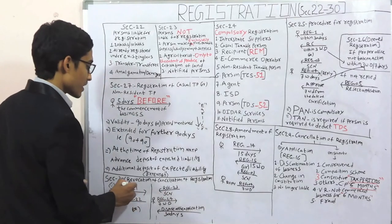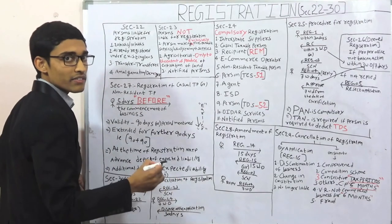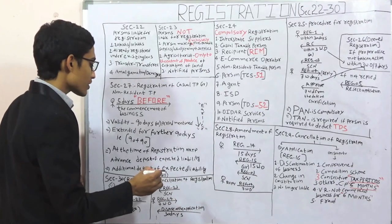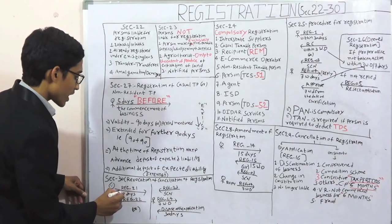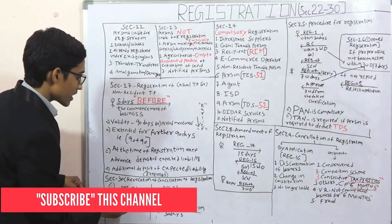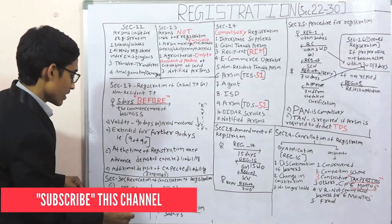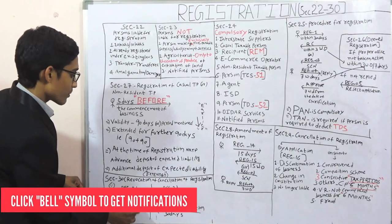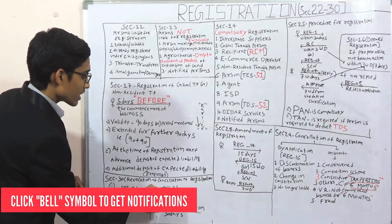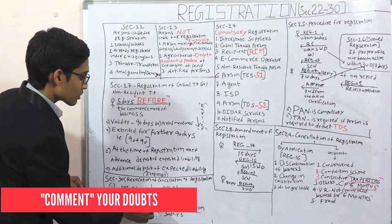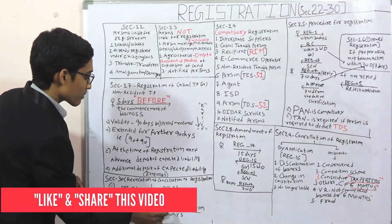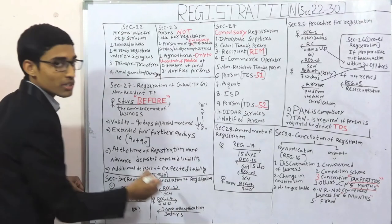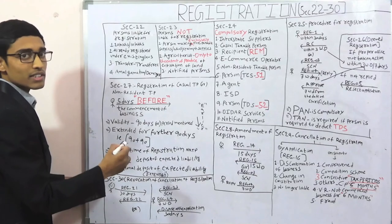Section number 30 — revocation of cancellation of registration. That is, if the registration is cancelled, how to restore it. You have to make an application in REG 21 within 30 days from the date of cancellation. Then it will be approved in REG 22, or a show cause notice will be issued in REG 23. The taxable person must reply in REG 24 within 7 working days from receipt of the show cause notice. Then within 30 days from receipt of REG 24, the officer will dispose of the application. This is the summary of the chapter.